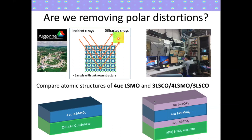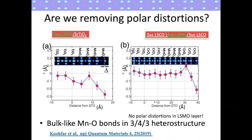We took the samples back to the synchrotron to verify that we are indeed removing these polar distortion instabilities. For bare LSMO on STO, the films show very strong polar distortions. When we put LSCO on both sides of the LSMO film, the distortions in the manganese oxygen planes go to zero, and the distortions are now concentrated only at the LSCO at the top surface of the films.